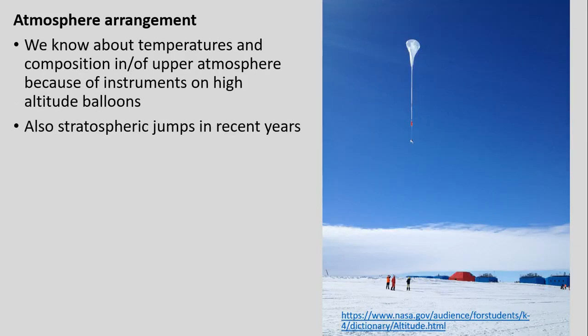To address how we know about temperatures and composition of the upper atmosphere — we know mainly because of instruments released on high altitude balloons. Also tied to the stratosphere, we've seen in recent years stratospheric jumps, a mix of daredevil and scientific discovery. One was in 2012 with Felix Baumgartner jumping for Red Bull Stratos, a project interested in studying Earth's atmosphere. Then Alan Ustis, an executive for Google, jumped even a little bit higher than Felix in 2014. Both projects had a fun element but also some scientific research.